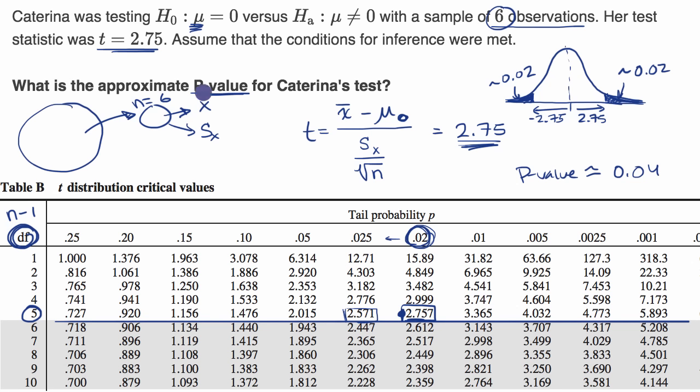Then, of course, Katarina would want to compare that to her significance level that she set ahead of time. If this is lower than that, then she would reject the null hypothesis, and that would suggest the alternative. If this is not lower than her significance level, then she would not be able to reject her null hypothesis.